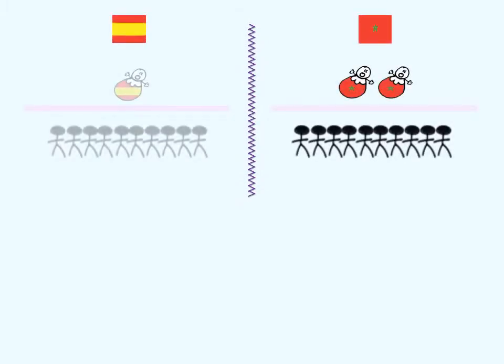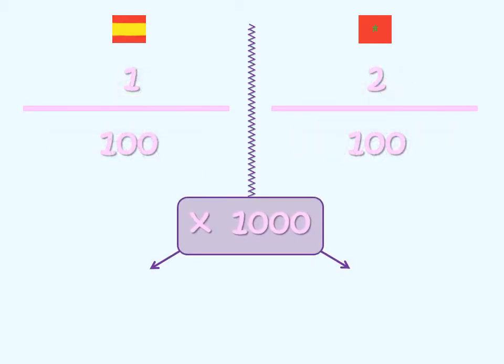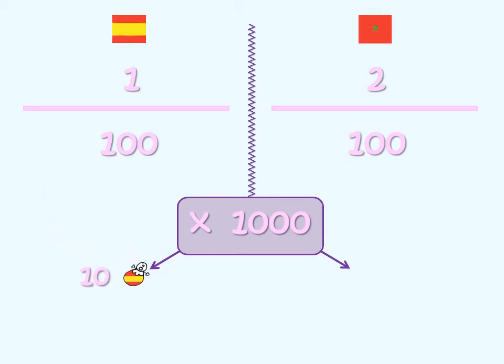When making this calculation for each country, we multiply the result by a thousand. We would say then that in Spain, for every thousand persons, ten were born, while the number for the same year in Morocco was twenty.